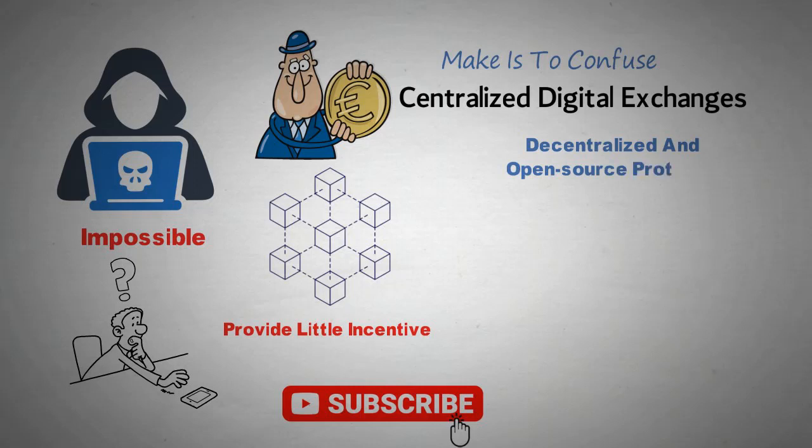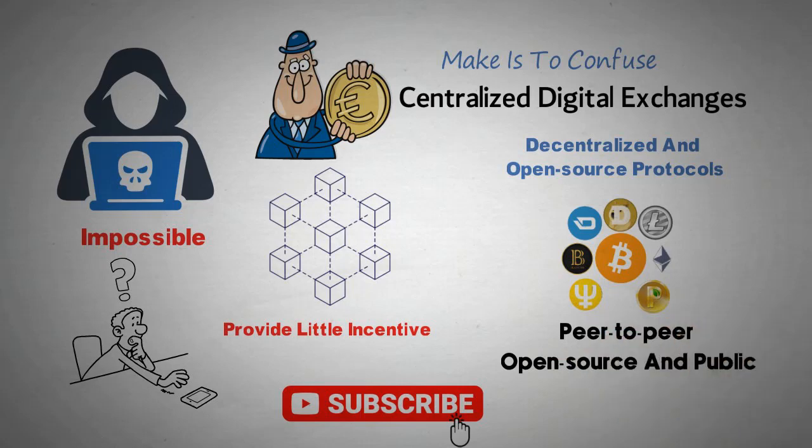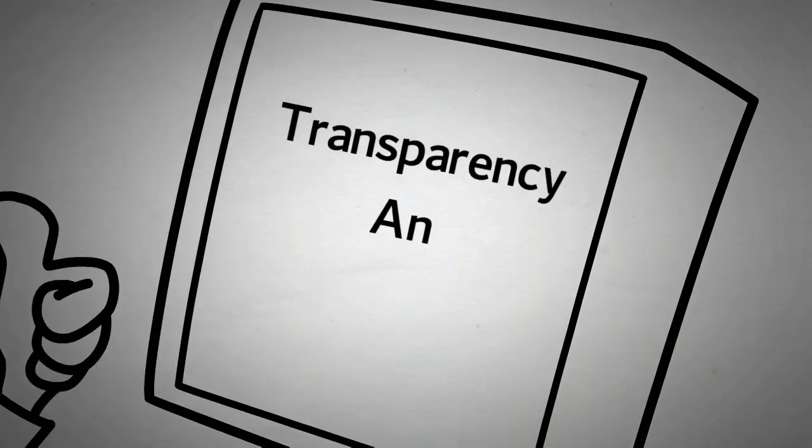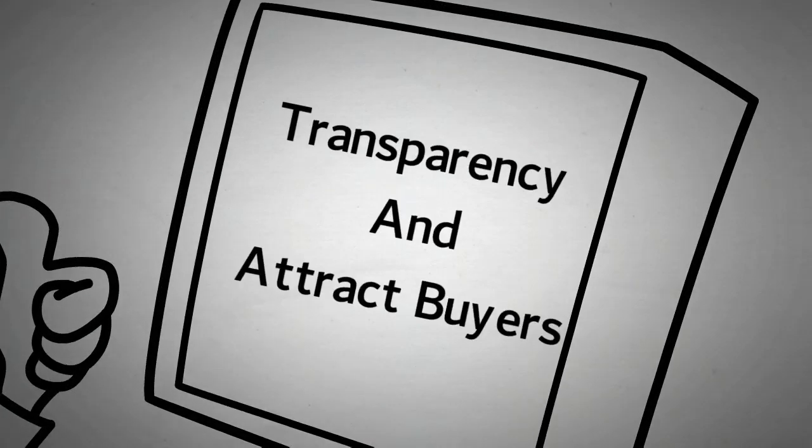Decentralized and open-source protocols: The blockchains behind most cryptocurrencies are peer-to-peer (P2P), open-source, and public, allowing everyone with the right equipment and knowledge to peek in under the hood. This is important to foster transparency and attract buyers.